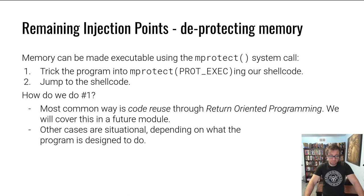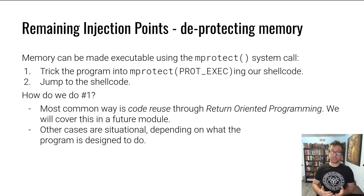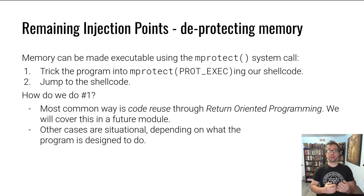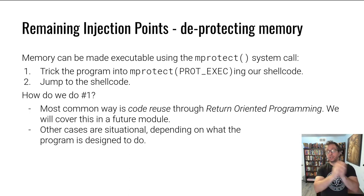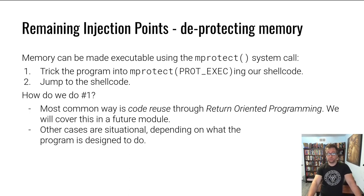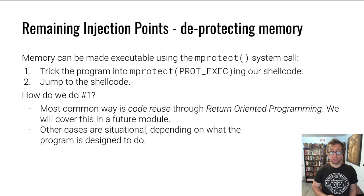So let's talk about the remaining shellcode injection methods. The most straightforward way is: you can use mprotect to actually change the permissions of memory to make it executable and writable. This is kind of a chicken-and-egg problem because usually in order to do that, you already have to have some high level of control over a program. A very common way in hacking challenges to do it is through return-oriented programming, which we will talk about in a future module — you basically create a small ROP program to mprotect a piece of memory and then run your shellcode out of that. Other cases are very situational; it really depends on what the program is designed to do and what the vulnerability is.